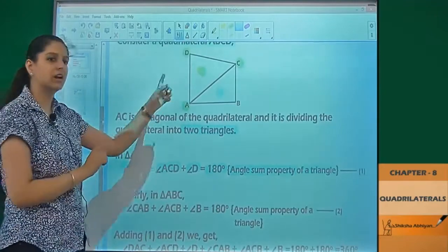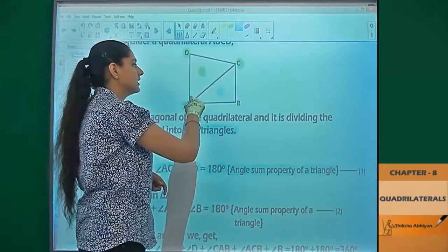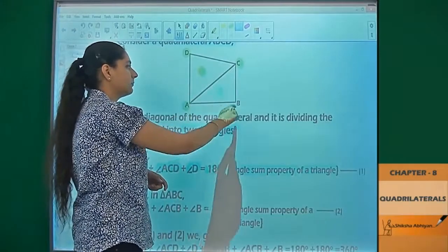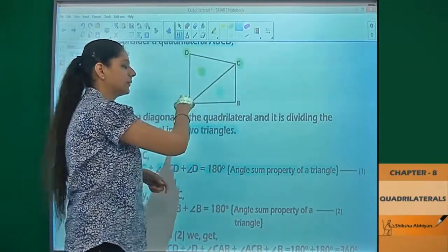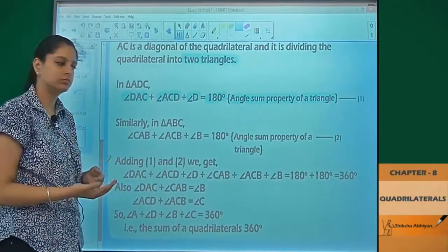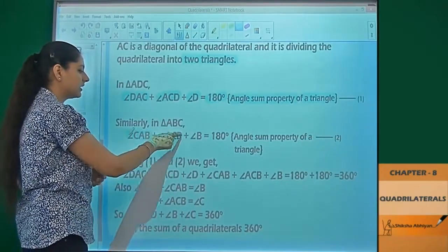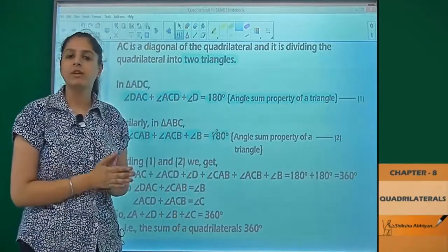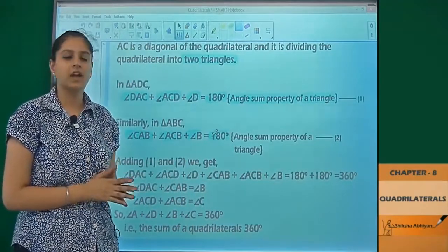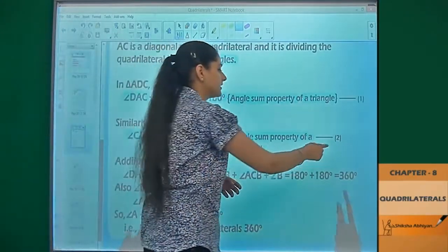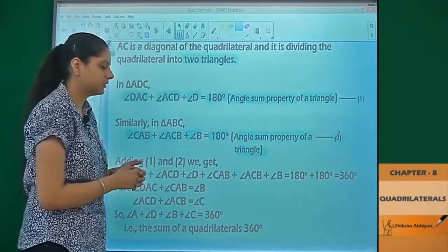Similarly, the second triangle ABC has three angles: angle CAB, angle ABC, and angle BCA. The sum of these three angles will also be equal to 180 degrees. So angle CAB plus angle ACB plus angle B is equal to 180 degrees. Why? Because the sum of all the angles of a triangle is equal to 180 degrees. That is the angle sum property of a triangle, and this is equation number two.